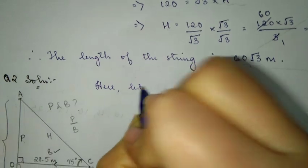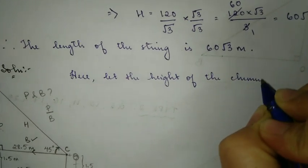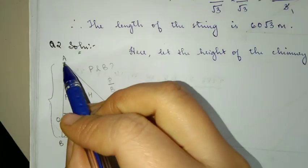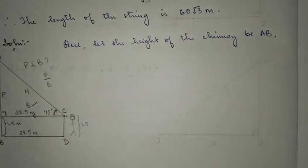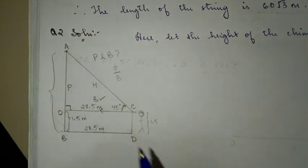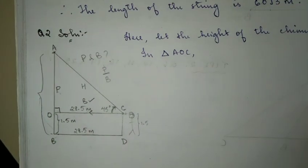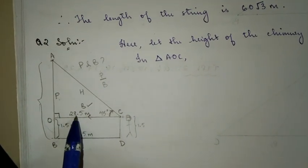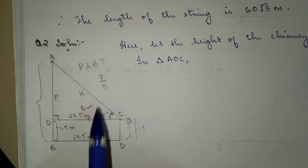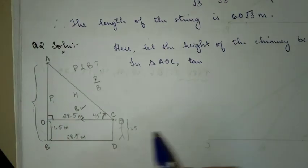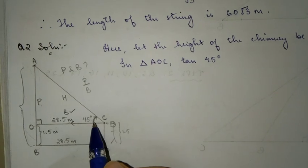Let's write down here: let the height of the chimney be AB. The entire height is AB. Now we are going to deal only with the triangle because we need to find out only AO. In triangle AOC, we are using tan theta. Tan 45 degrees.